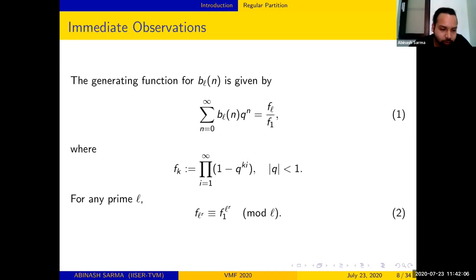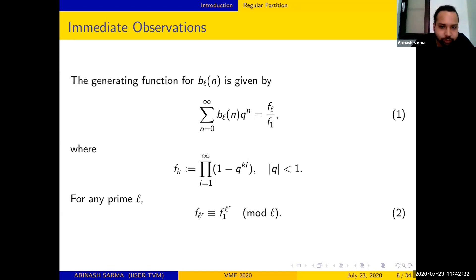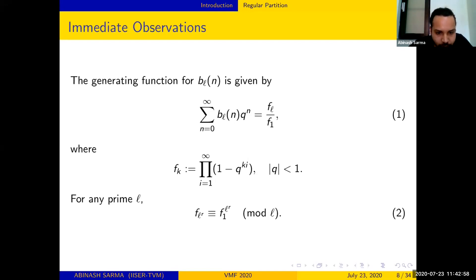We can make a few immediate observations. First, the generating function of the l-regular partitions is given by: the sum from n=0 to infinity of b_l(n) q^n equals F_l over F_1, where F_k is defined by that infinite product. Note that 1/F_1 is the generating function for the general partition function. We want to cancel those factors contributing to parts divisible by l, so F_l comes in the numerator, and we get l-regular partitions as coefficients of q^n.